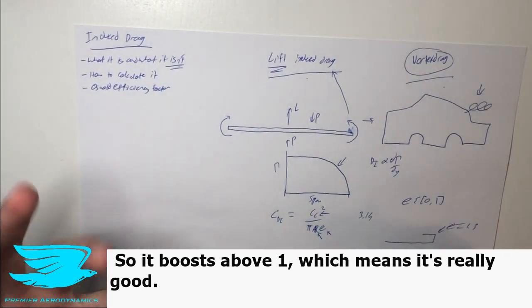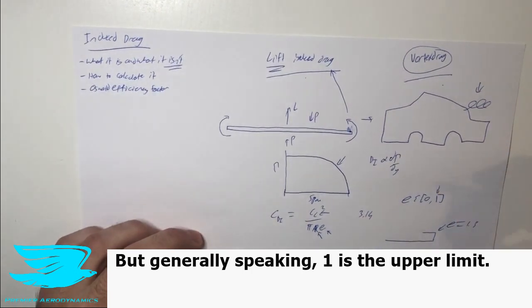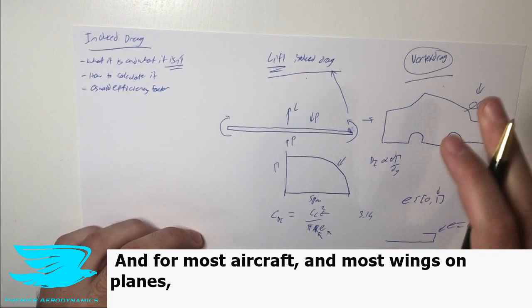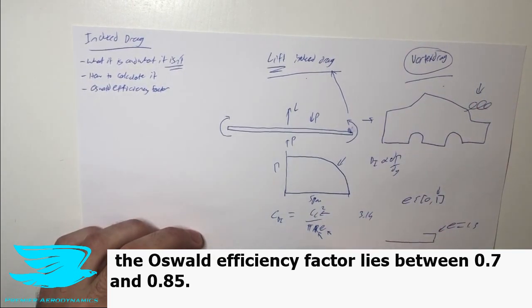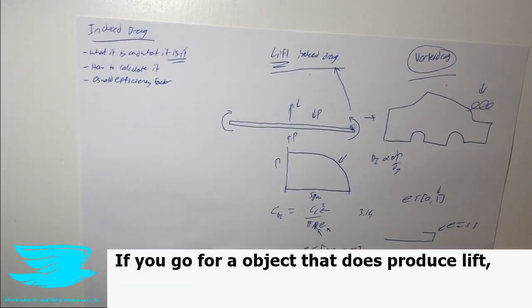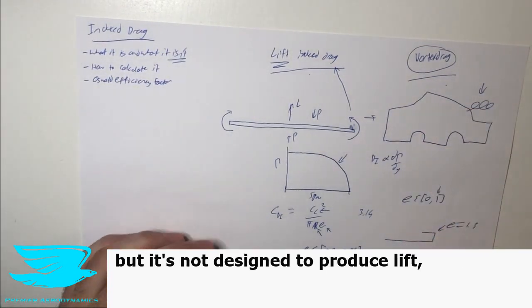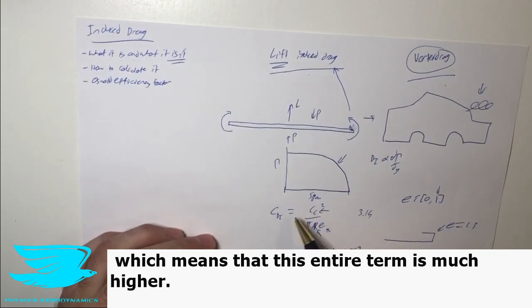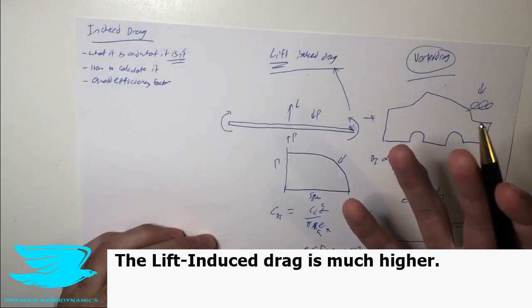But generally speaking, one is the upper limit. And for most aircraft and most wings on planes, the Oswald efficiency factor lies between 0.7 and 0.85. So that's pretty good. If you go for an object that does produce lift, but it's not designed to produce lift, often this E factor will be lower, which means that this denominator is lower, which means that this entire term is much higher, lift-induced drag is much higher.